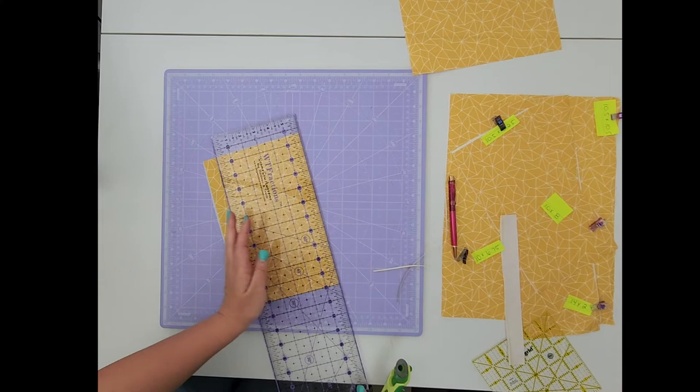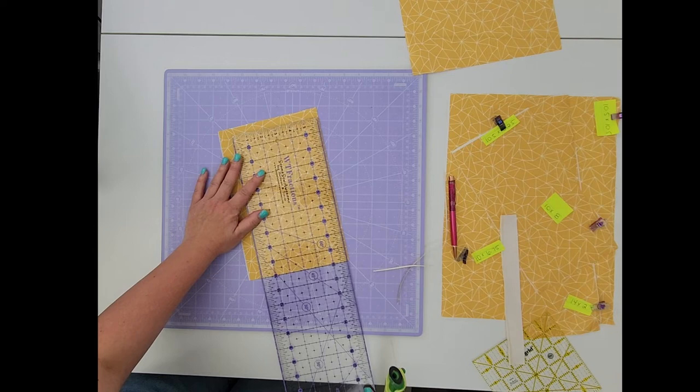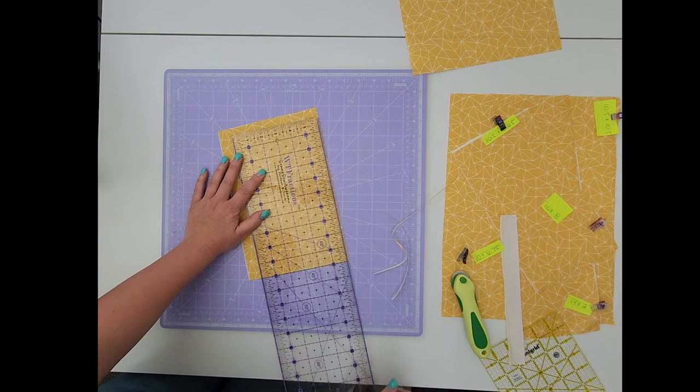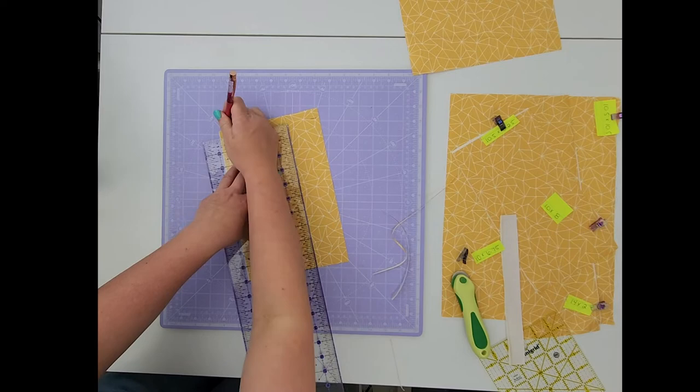We are going to mark our 10 inch mark along the top, making sure that we mark 3 points. Now we are going to rotate our fabric and cut along the 3 points that we just made.